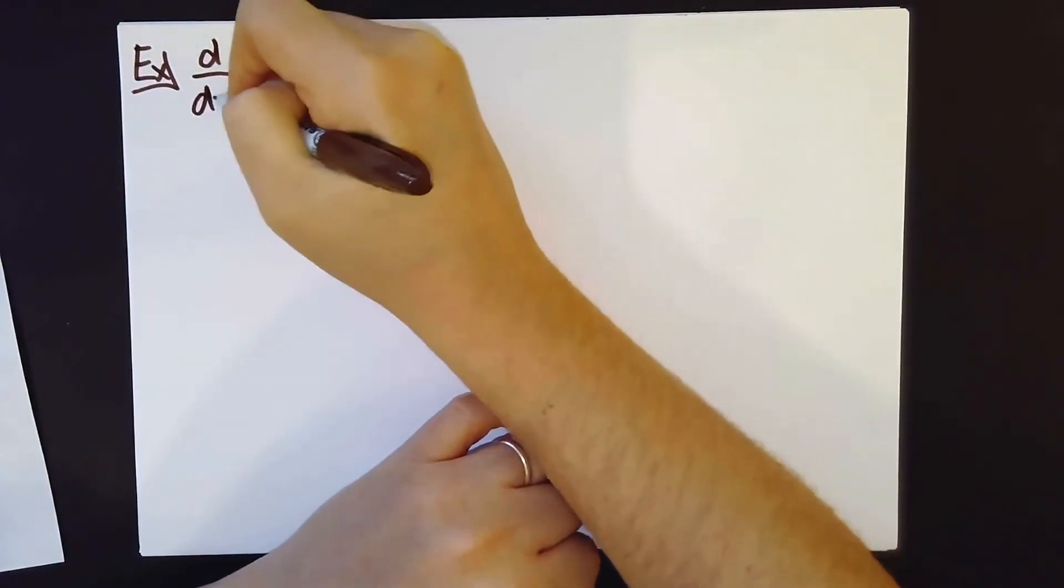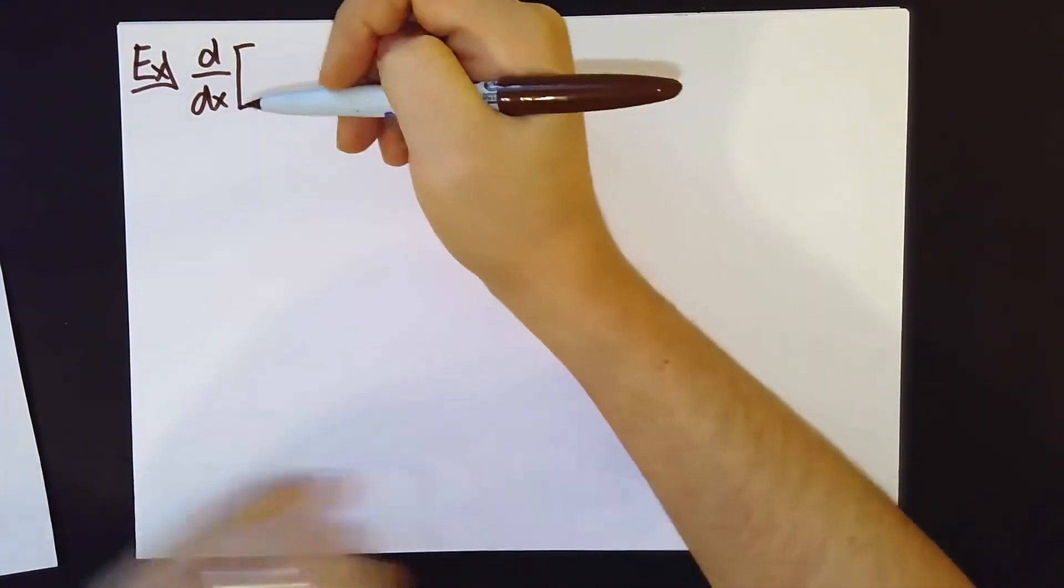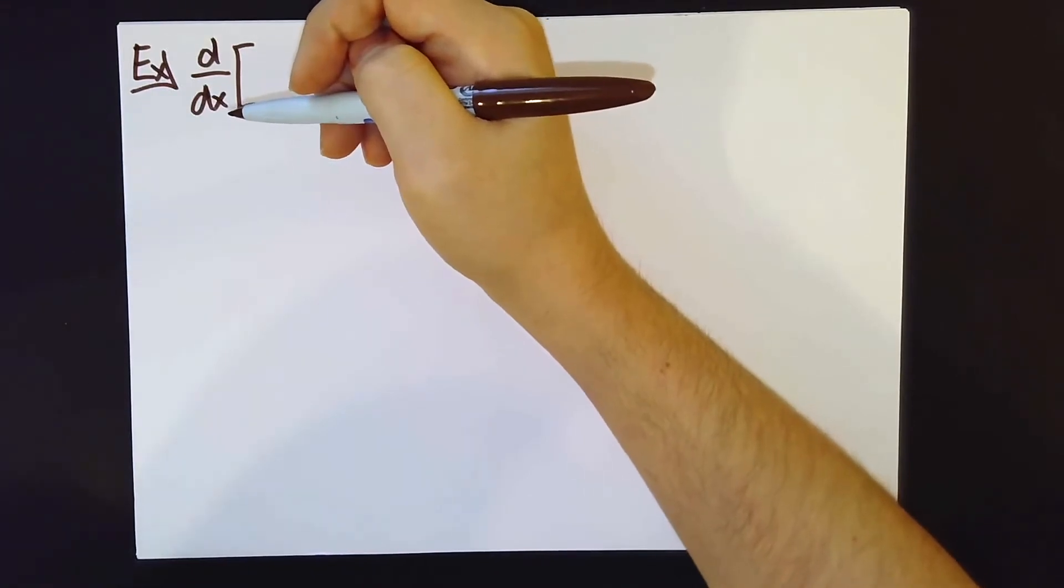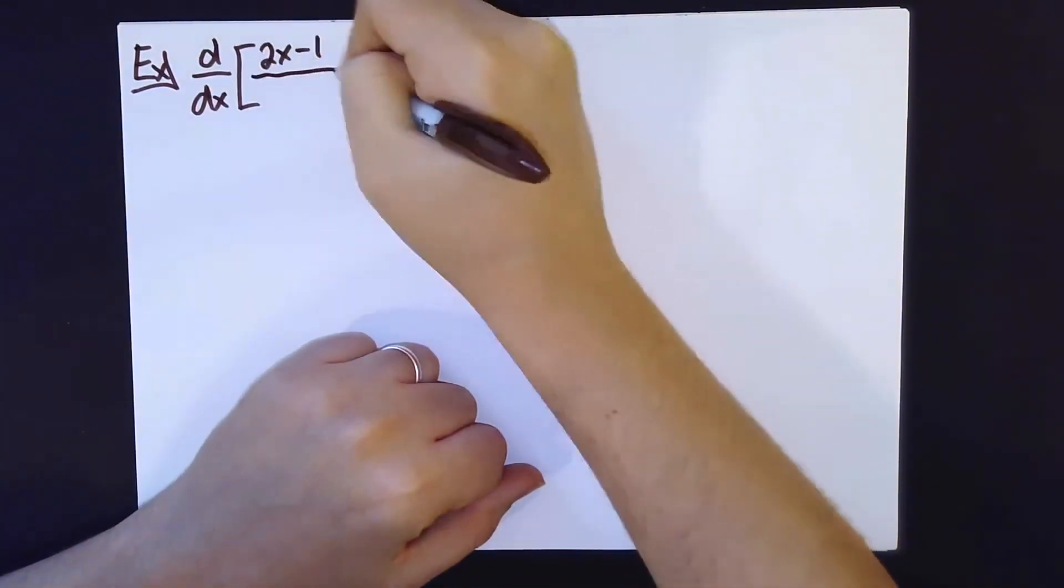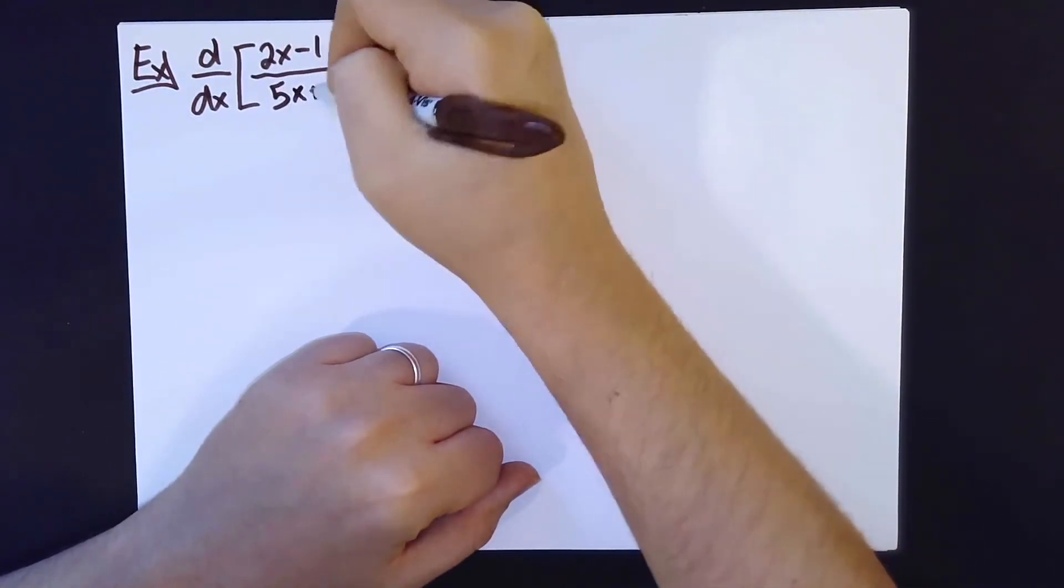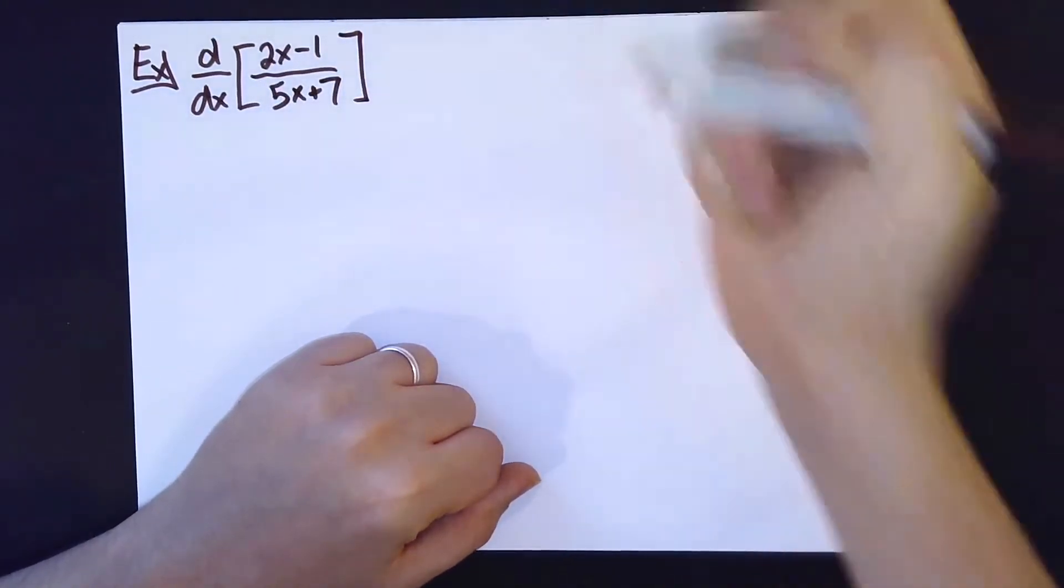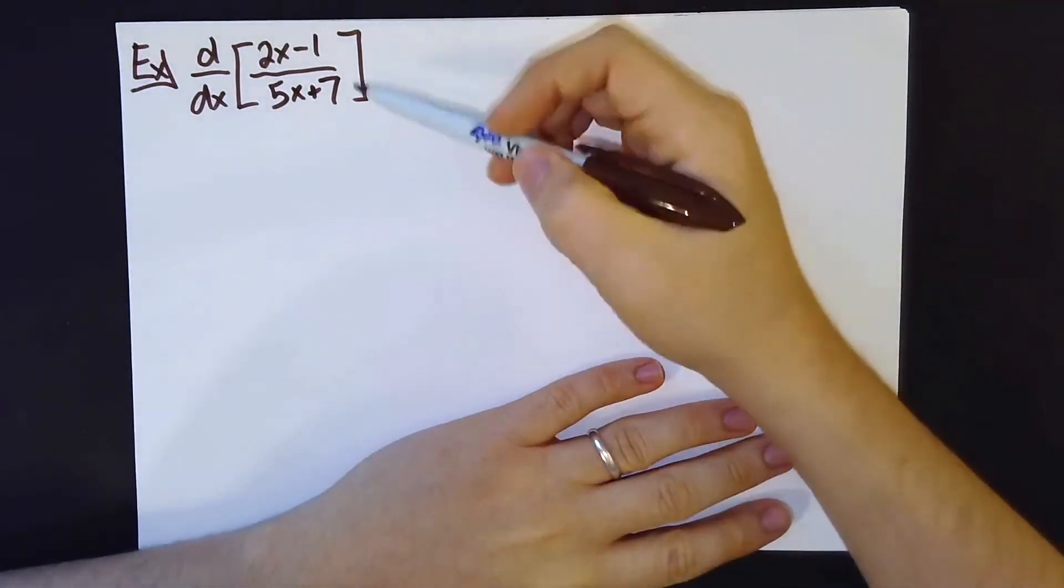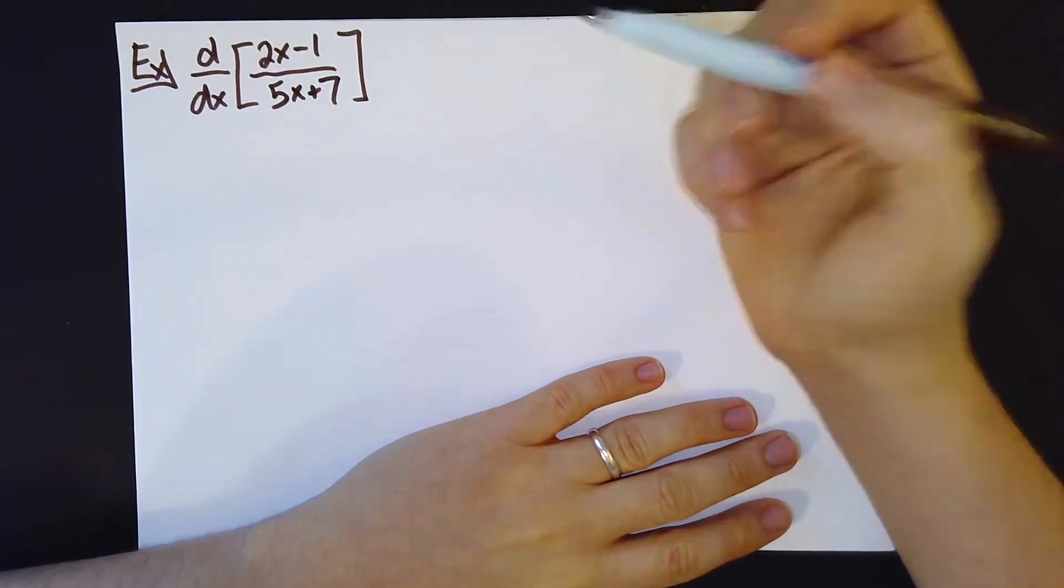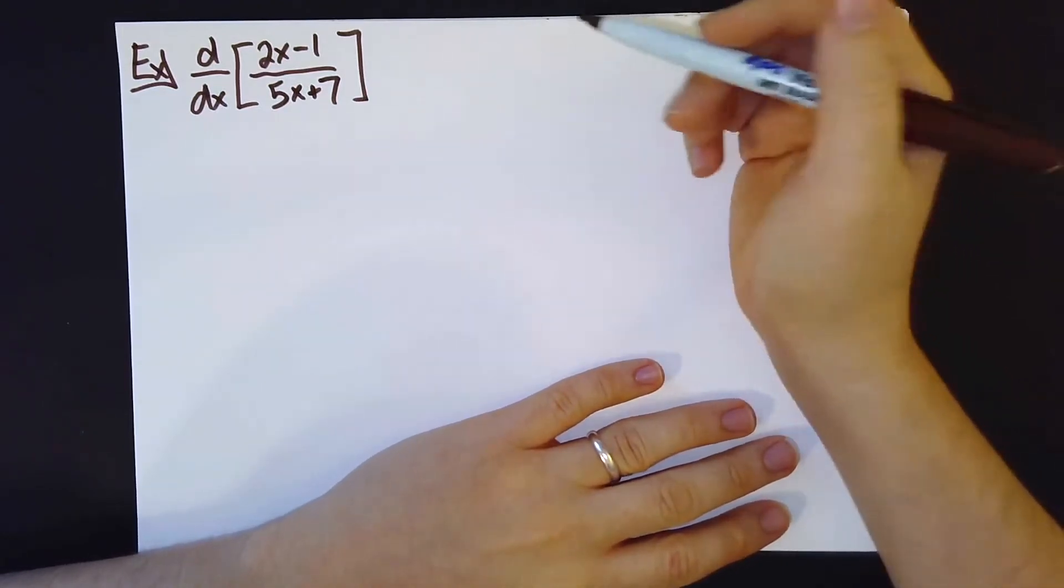Now, as far as using this rule goes, we're going to use it in a way that is very similar to how we have used our other rules. The only difference is, because this rule is a bit more complicated, the algebra and quotient rule questions can get a little bit messier.